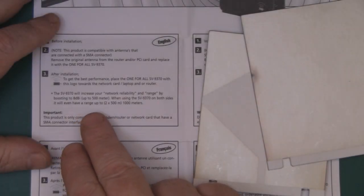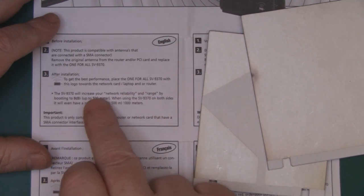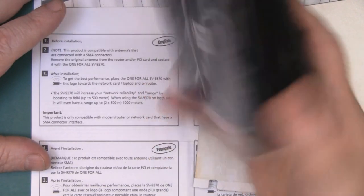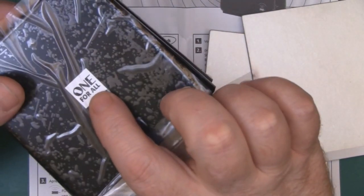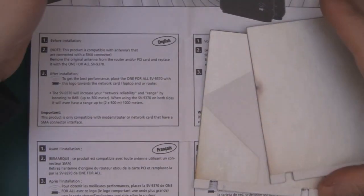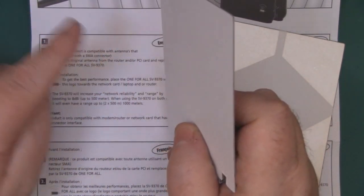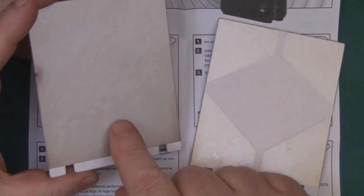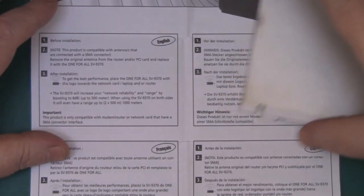Something else I've just noticed in the instructions: it says to get the best performance, place the one for all with this logo towards the network card laptop or router. You've got that logo on both sides, so you've got a little wireless symbol here and the one for all logo, and it's the same on the other side. Now this antenna, this is a back reflector so on this side you're not going to get any wi-fi signal really. You've got this one which is the main driven element of a patch antenna so you're not going to get any signal from this side at all.